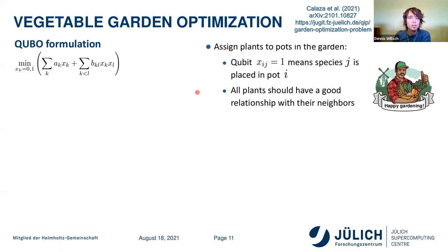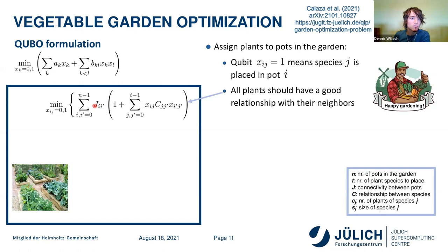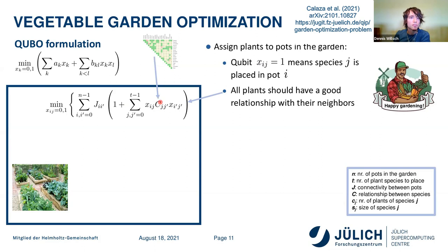The optimization objective is that all plants should have a good relationship with their neighbors. We express this mathematically by summing over all pots — if pot i and pot i-prime are neighbors, we sum this cost. The cost matrix encodes the vegetable relationships: minus one if species j and j-prime like each other giving zero contribution, zero if neutral giving a slightly positive contribution, and one if they don't like each other giving a very positive contribution. Only at the minimum do we find an arrangement that works very well.